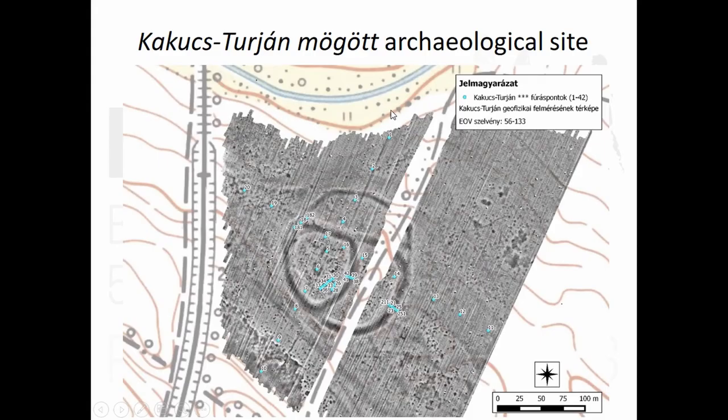Before anything started at Kakucs, we had the opportunity to plan a coring series. We called it a mapping of the site. We had this very nice geophysical prospection map, and then we designed a coring series focusing on the key points, the key parts of the settlement. First of all, we wanted to have some information about the rough stratigraphy, not the micro areas, just to have some information how it looks like beneath our feet. Therefore, we designed two cross-section coring profiles.